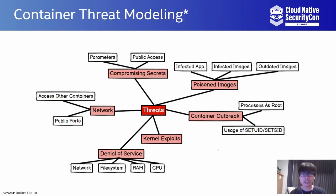However, it is really hard to address the risks before knowing the potential threats. A systematic analysis of container threats is therefore needed. Here we present the threat model given by the Open Web Application Security Project, OWASP, on Docker in 2019. The threats of containers have been categorized into six aspects according to OWASP.